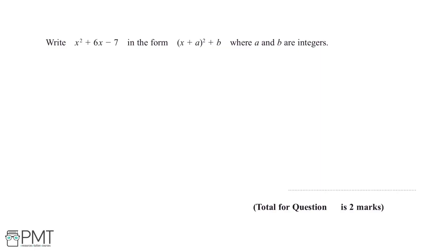Write x squared plus 6x minus 7 in the form x plus a squared plus b, where a and b are integers.